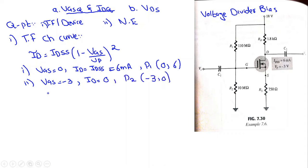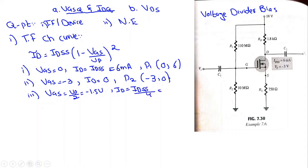For the third point, we take VGS = VP/2 = −3/2 = −1.5V, then ID = IDSS/4 = 6 mA/4 = 1.5 mA. So the third point is (−1.5, 1.5 mA).